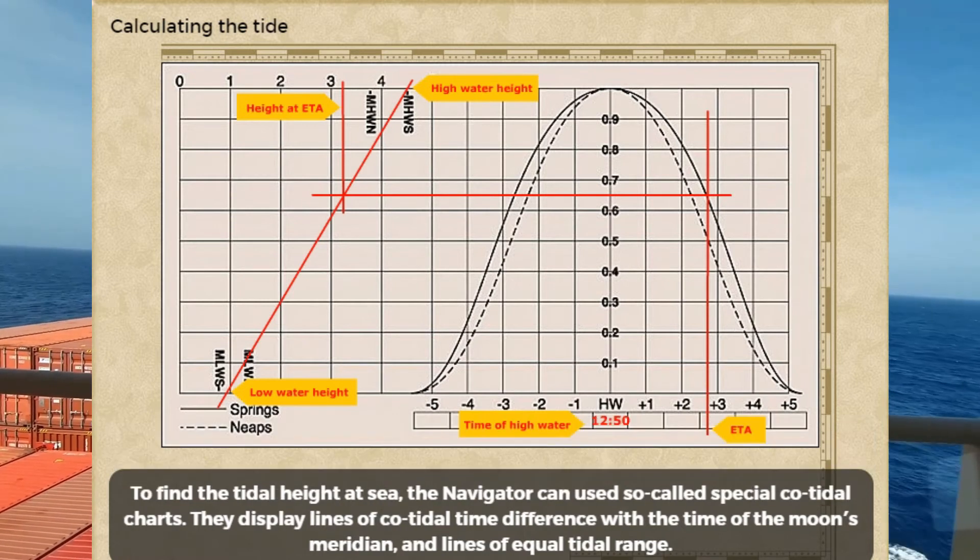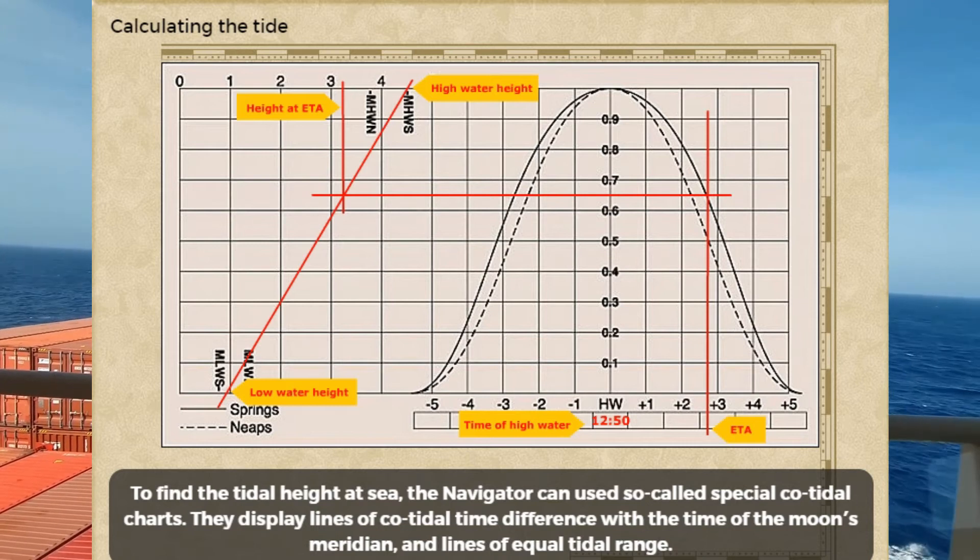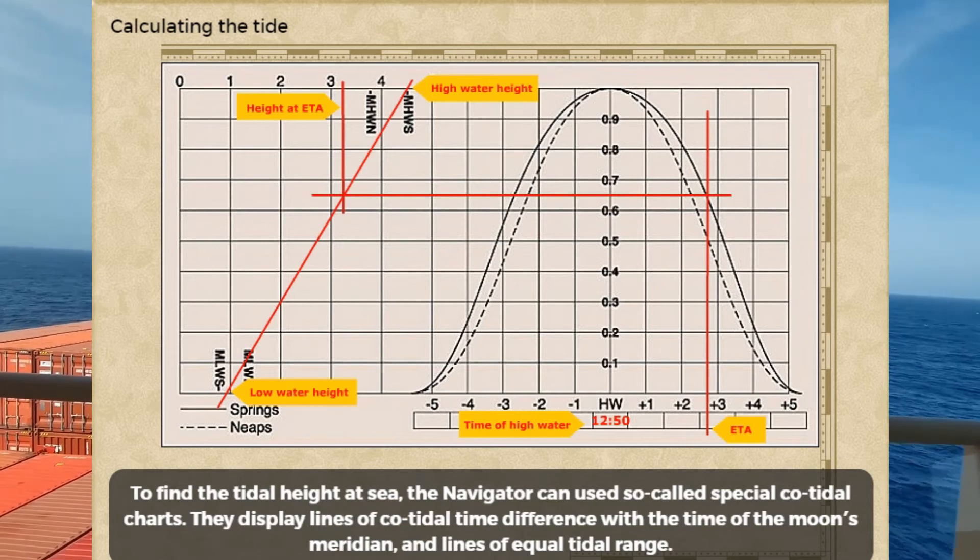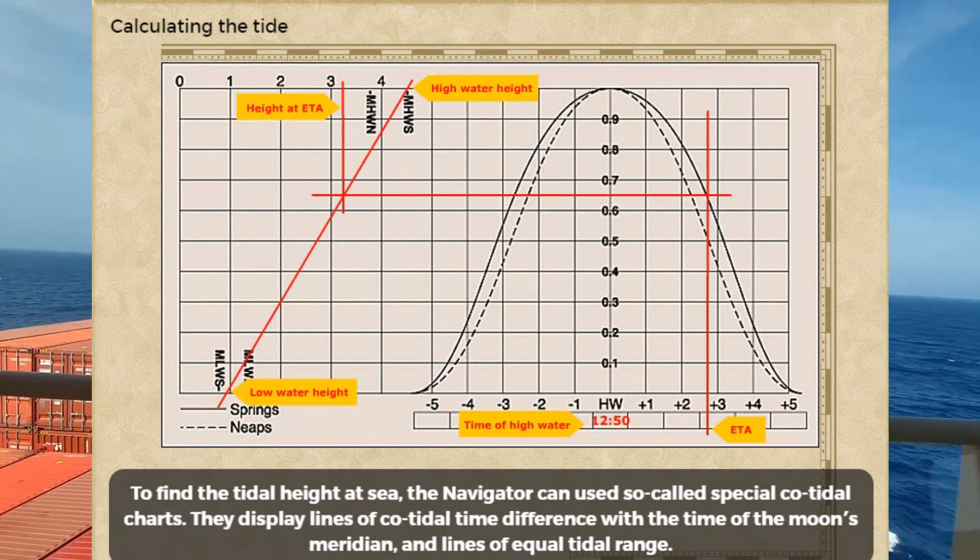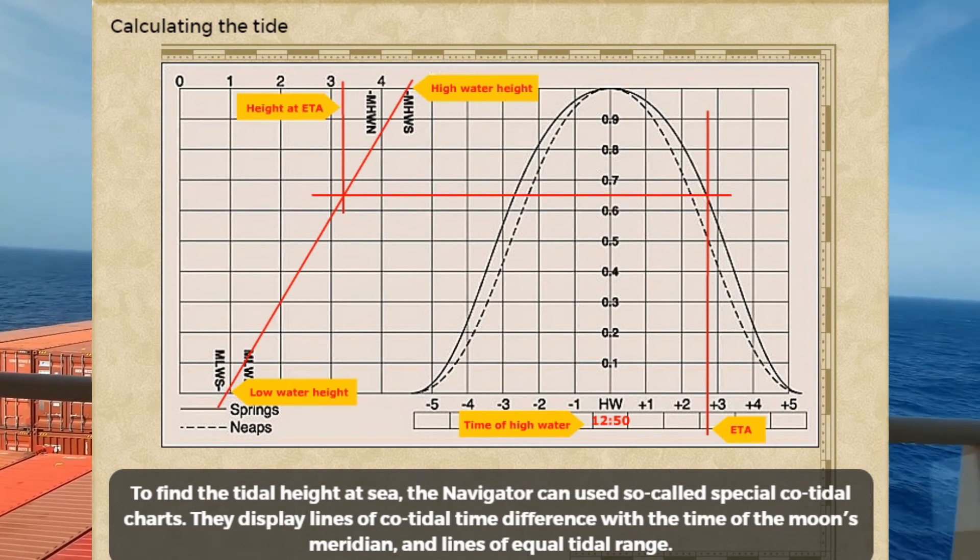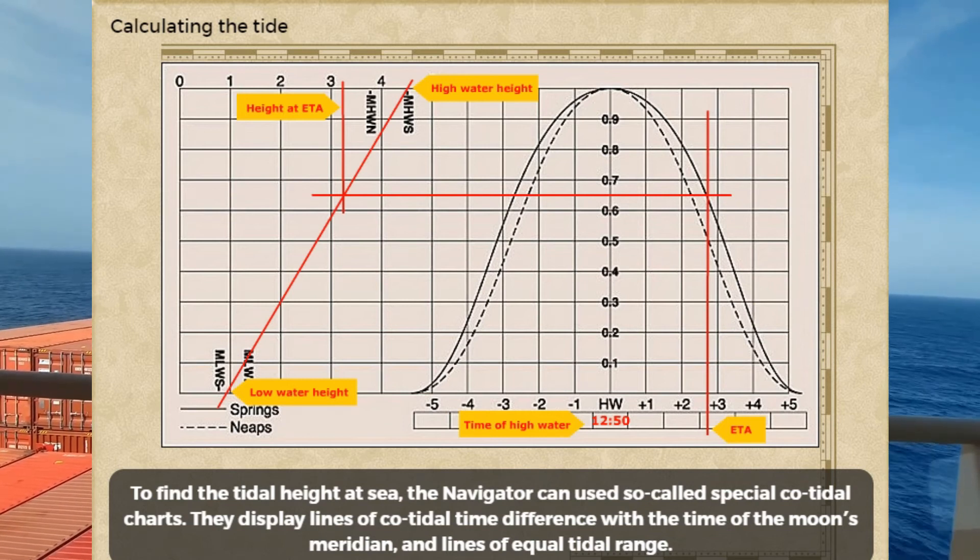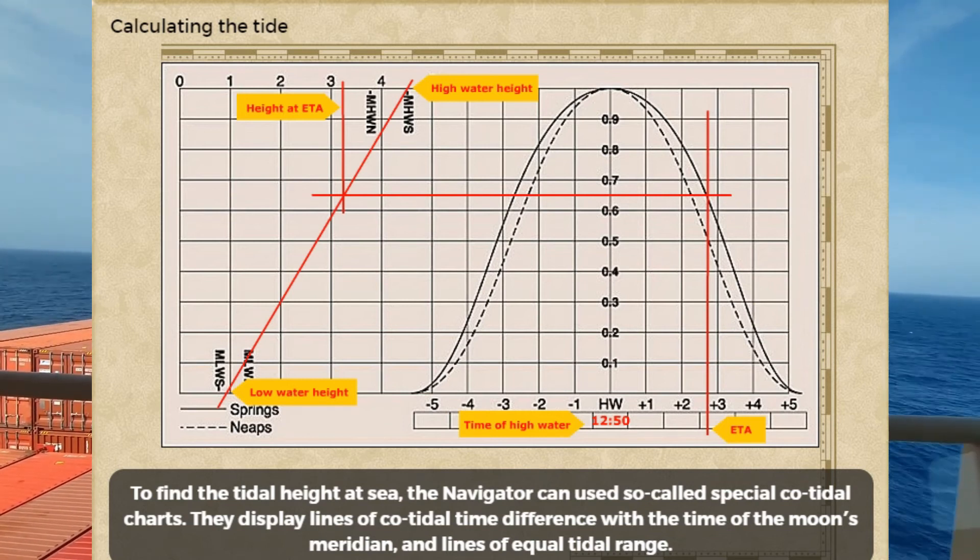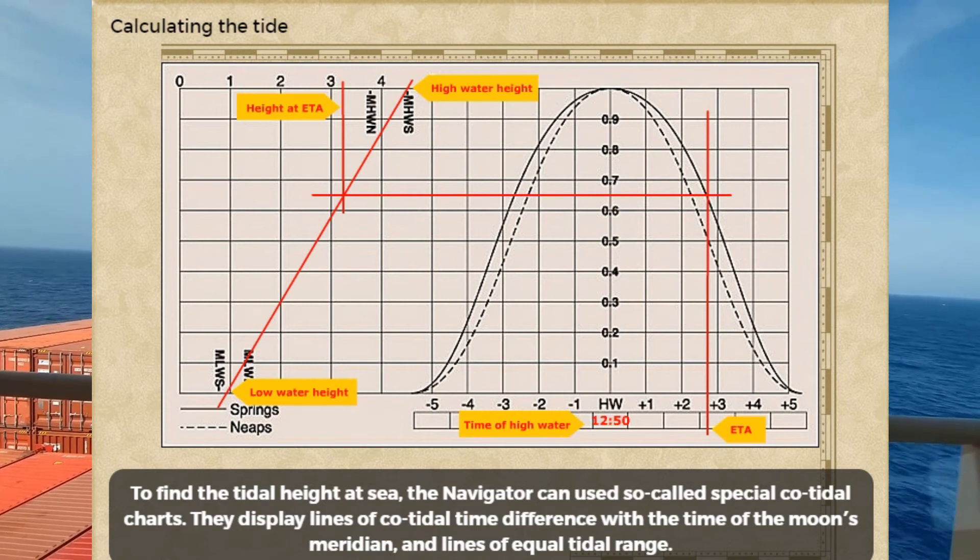To find the tidal height at sea, the navigator can use so-called special cotidal charts. They display lines of cotidal time difference with the time of the moon's meridian and lines of equal tidal range.